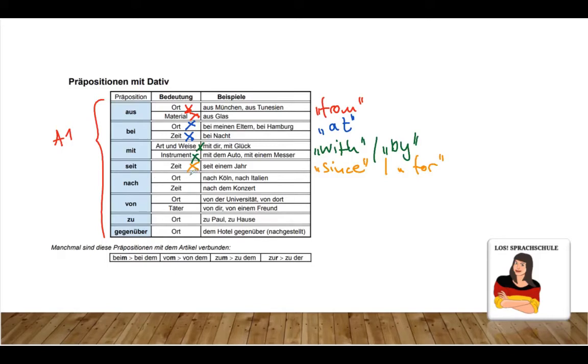Nach, towards. Can of course mean for a location. Towards is, so to speak, the opposite of from. Nach Köln. Nach Italien. To or towards Cologne, towards Italy. But it can also be time related. Nach dem Konzert, which makes it after the concert. The opposite, by the way, for after is vor. It also needs Dativ, but they don't list it here for some reason.